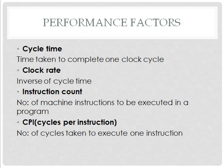The first factor is cycle time, denoted as TOR — the time taken to complete one clock cycle. Next is clock rate, denoted as F, which is the inverse of cycle time, so F = 1/TOR. Next is instruction count: how many machine instructions are to be executed in a program, represented as IC. Next is CPI, meaning cycles per instruction — the number of cycles taken to execute one instruction, represented as CPI.